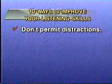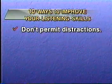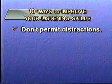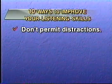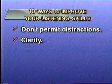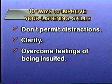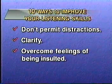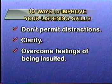Number seven, don't permit distractions. When you're talking with someone, do not allow others to come up and interrupt. If there's too much noise, try to move to a location where you can hear better. Number eight, clarify. As someone else is speaking, clarify that person's message in your own mind. If you're not sure what you've just heard, ask that person to repeat the message. People generally are willing to clarify and explain to clear up any misunderstandings. Number nine, overcome feelings of being insulted. Many people use language you might not care for, including slurs against other people. Don't take things personally — listen to their message.